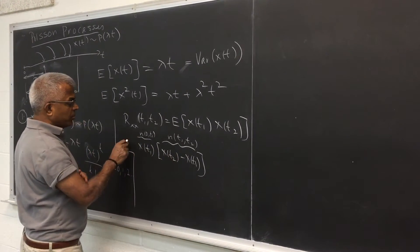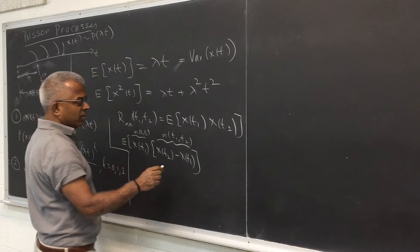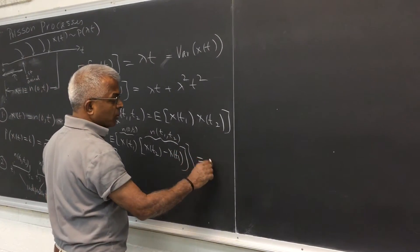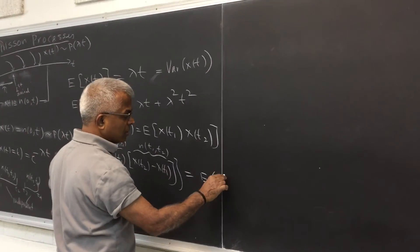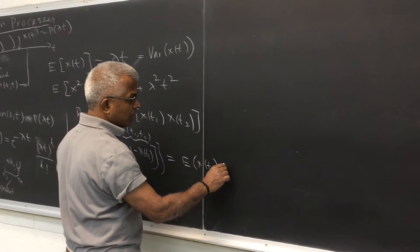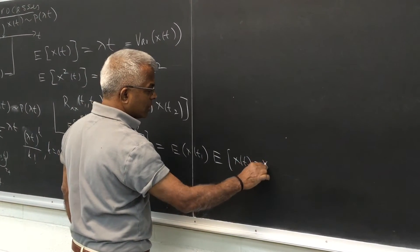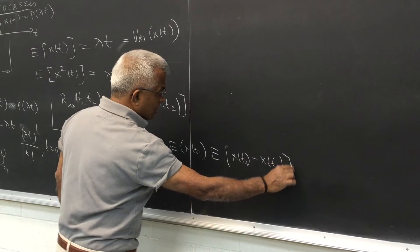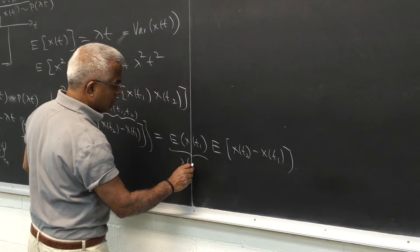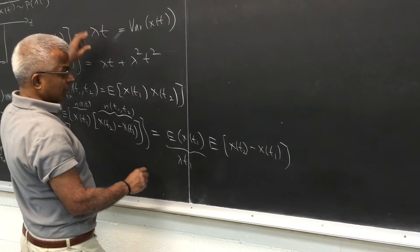These two events are independent. Consequently the expected value of this is the product of the expected values. So this is easy, this is from here lambda t1 from the first line.